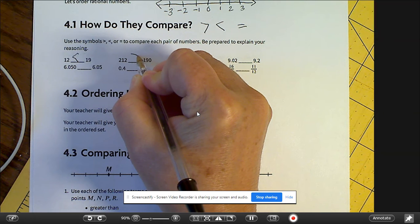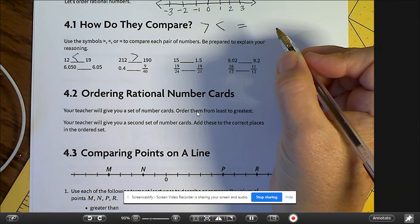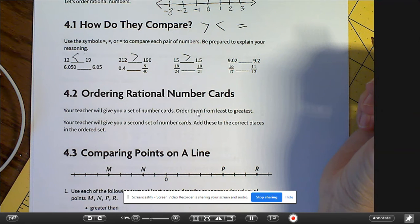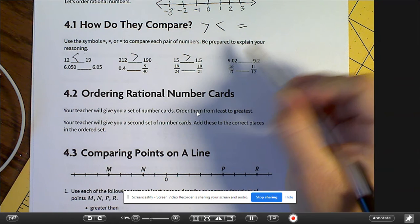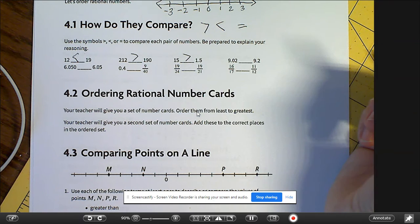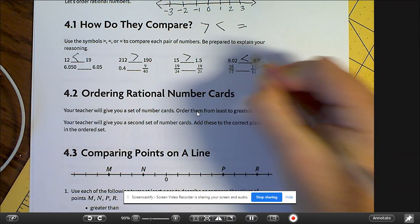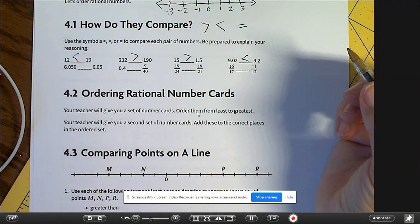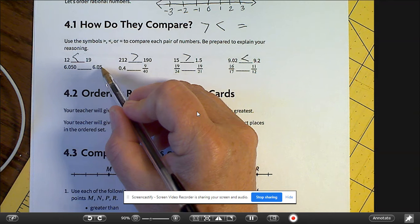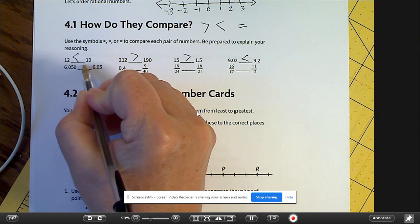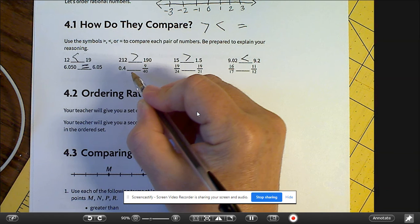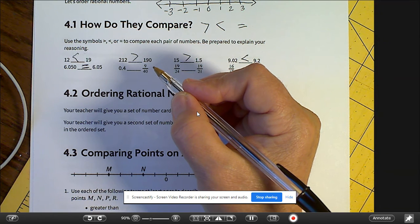212 is greater than 190. 15 is greater than 1.5. 9.02 and 9.2—so this is a zero in the tenths place, so it's going to be less than 9.2. 6.050 and 6.05, those are equal.